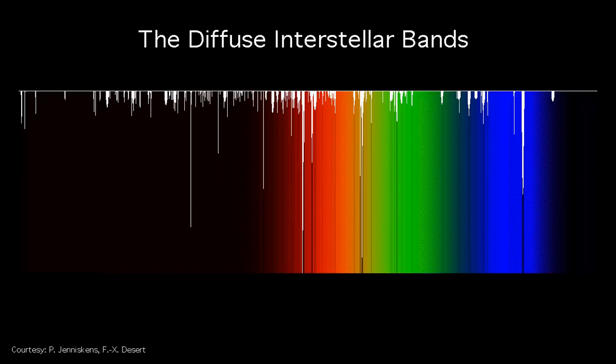Diffuse interstellar bands, or DIBs, are absorption features seen in the spectra of astronomical objects in the Milky Way and other galaxies. They are caused by the absorption of light by the interstellar medium. Circa 500 bands have now been seen in ultraviolet, visible, and infrared wavelengths.